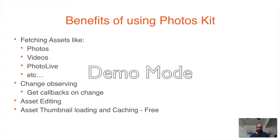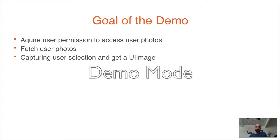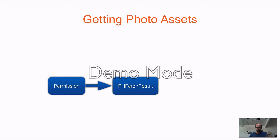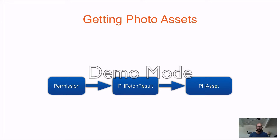Plus, it gives you a lot of benefits like caching and thumbnails. The benefits are pretty obvious, so let's get started. The goal of this demo is to get the user permission — because you have to get permission from the user to access their private photos — and then fetch the photos and pick one of them. The basic logic is: first we request permission, then we construct a PHFetchResult, which is a query that goes to the photos library, gives me back a list of assets, and I can pick one of those assets.